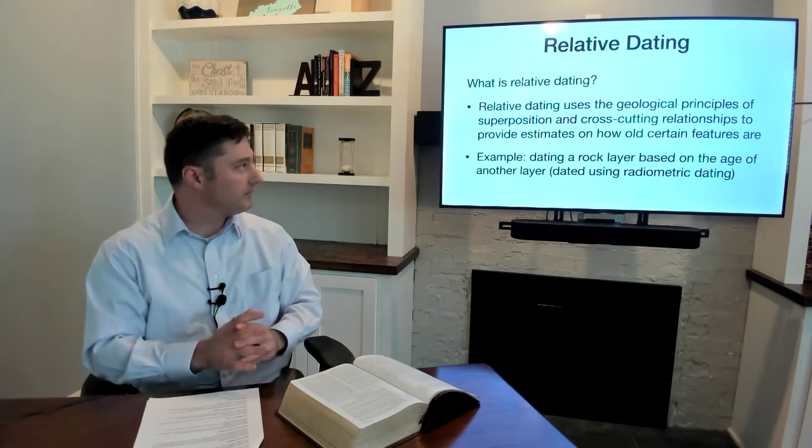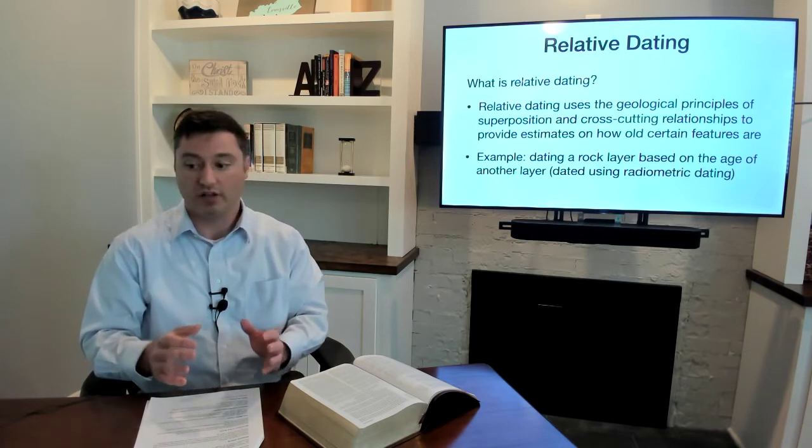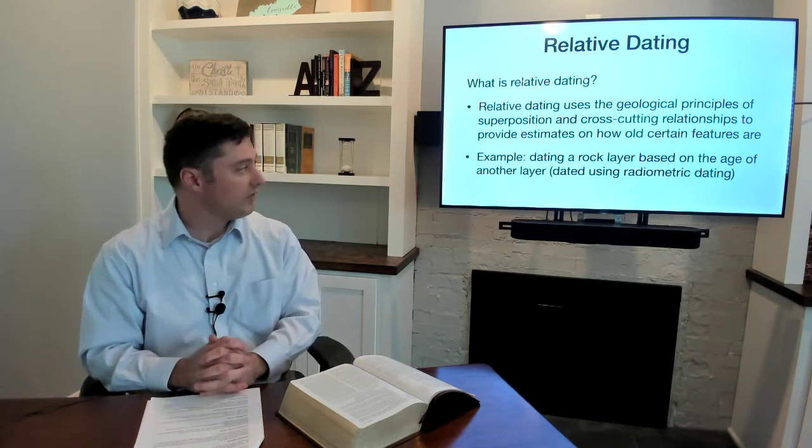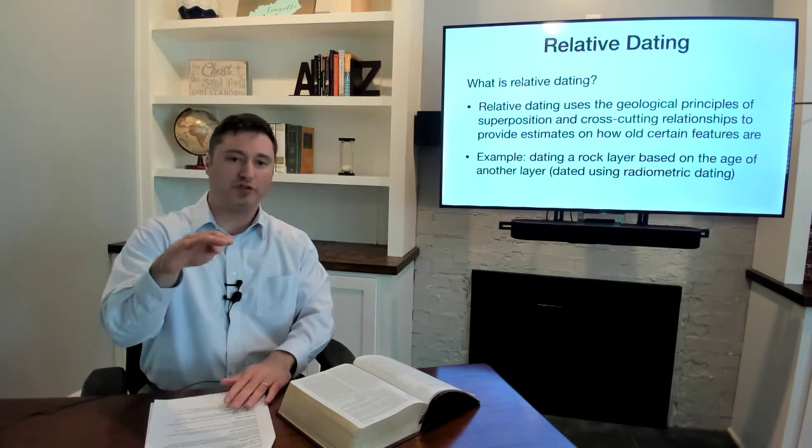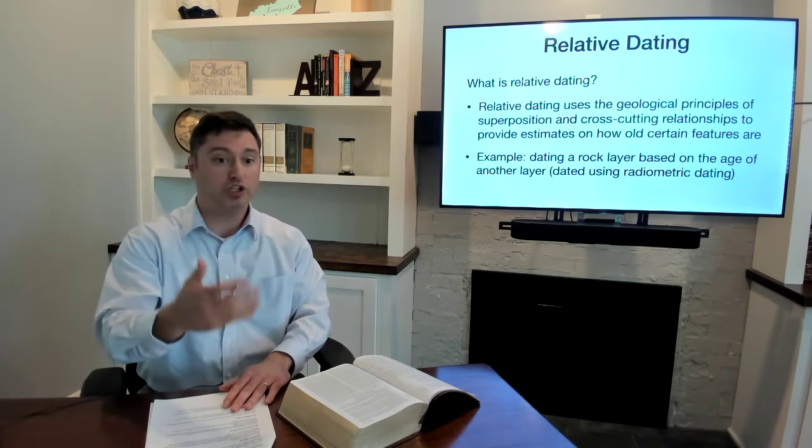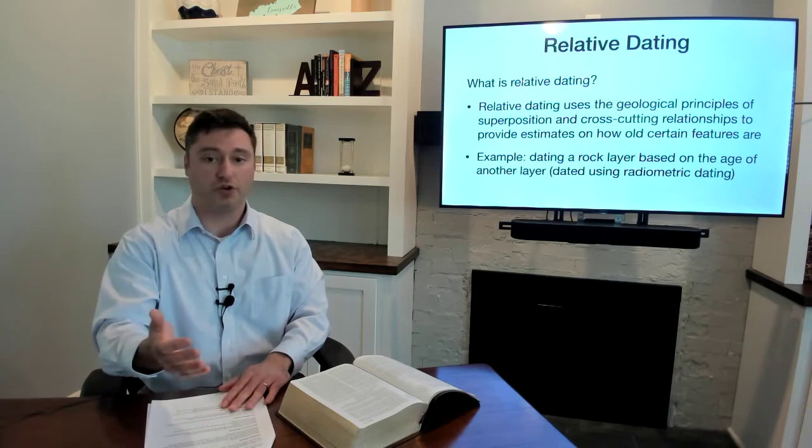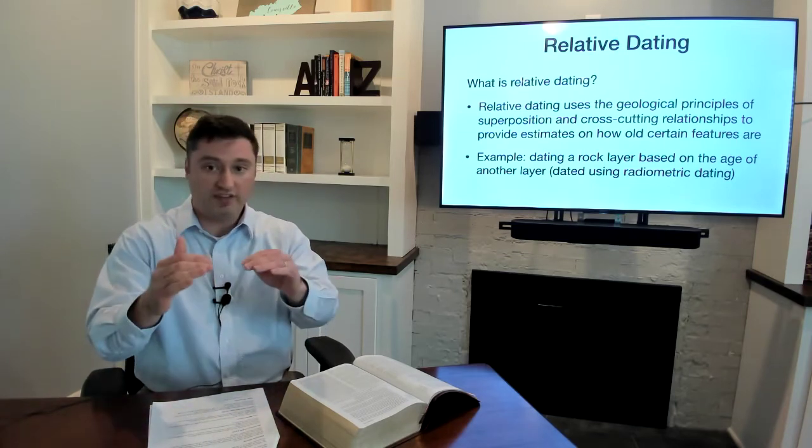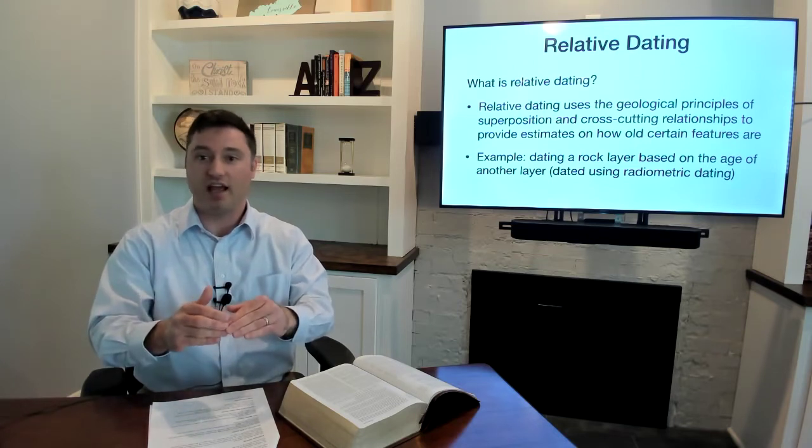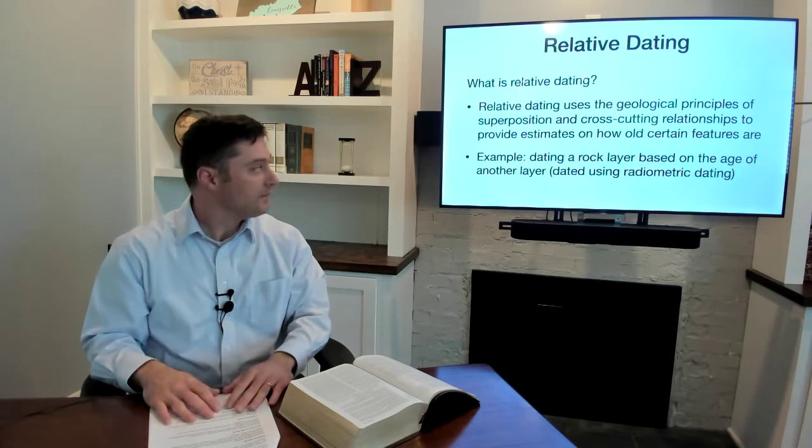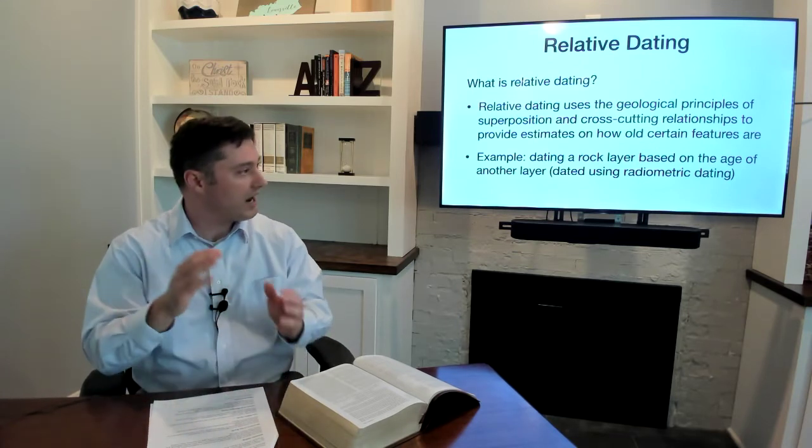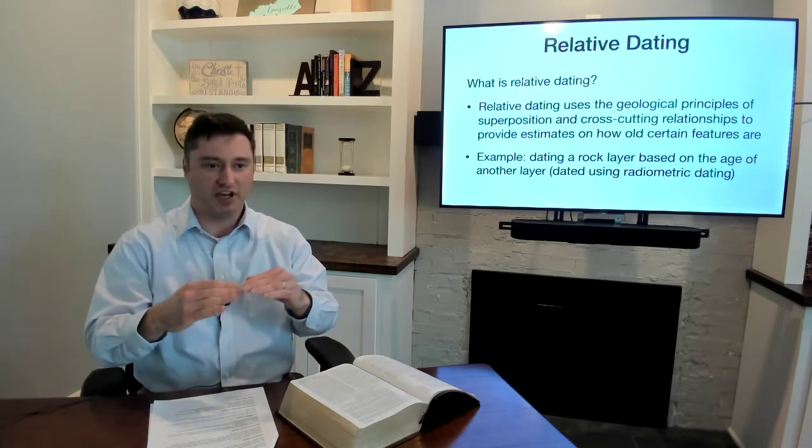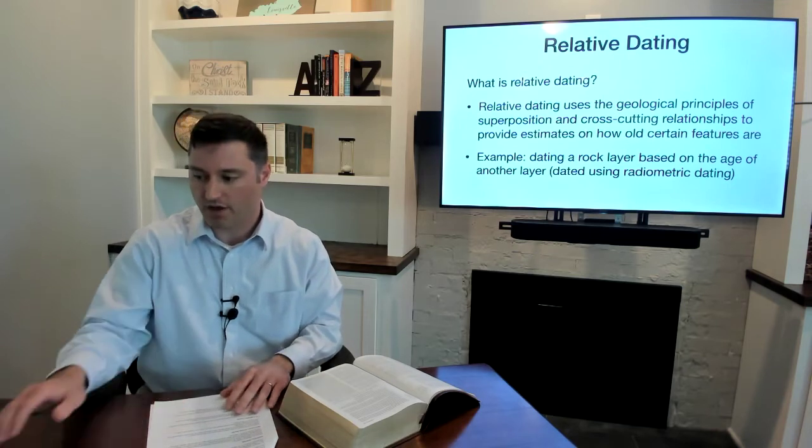So what is relative dating then? Well, relative dating uses geological principles like superposition and cross-cutting relationships to provide estimates on how old certain features are. So imagine, for example, that you could date one layer of rock based on something you find in that rock layer. You can use carbon dating. And you find out that that layer is like 30,000 years old or whatever. Then the layer below that layer, again assuming no tectonic activity in that location, you can say, well, that lower layer must be older than 30,000 years old. And so then you could give a range of dates there as well. So that's how relative dating works. We try to find features that we can date absolutely. And then we go from there. We work from there and use deductive reasoning to get to a relative dating of that particular feature.